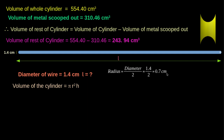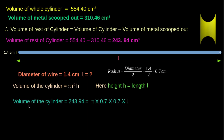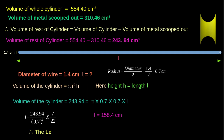The volume of the cylinder is given by πr²h, where h is nothing but the length l. The volume of the cylinder is 243.94, which is equal to π × 0.7 × 0.7 × l. On substitution, l is equal to 243.94 divided by 0.7² multiplied by 7/22. We get the length of the wire l = 158.4 cm. Therefore, the length of the wire is 158.4 cm.